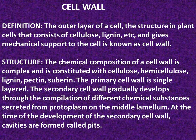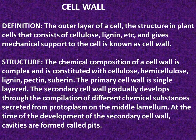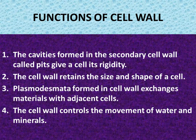Structure: the chemical composition of a cell wall is complex and it is constituted with cellulose, hemicellulose, lignin, pectin, and suberin. The primary cell wall is single-layered. The secondary cell wall gradually develops through the compilation of different chemical substances secreted from the protoplasm on the middle lamella. At the time of development of the secondary cell wall, cavities are formed called pits.